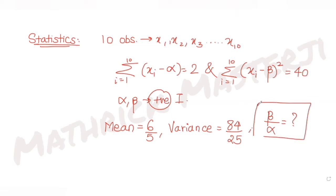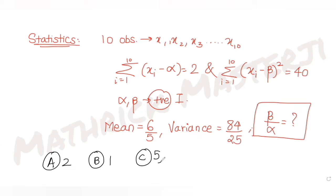The question is asking us to find the value of beta over alpha. The answer choices given are: 2, 1, 5/2, and 3/2. We have to find the correct answer for this value of beta over alpha.